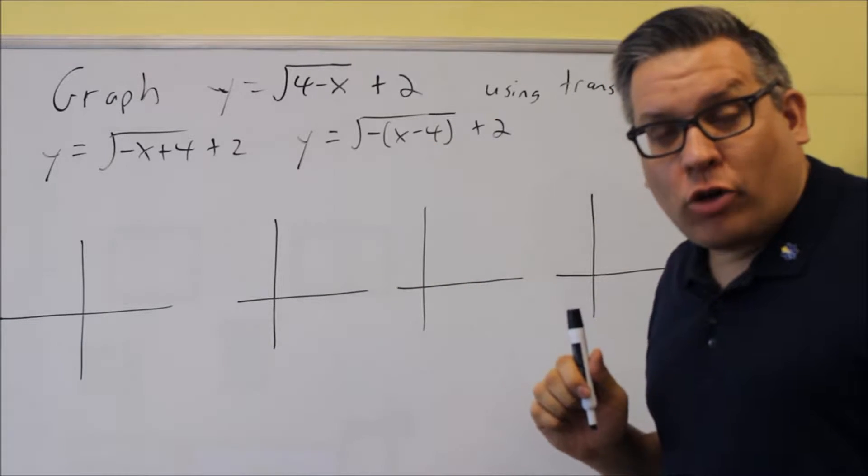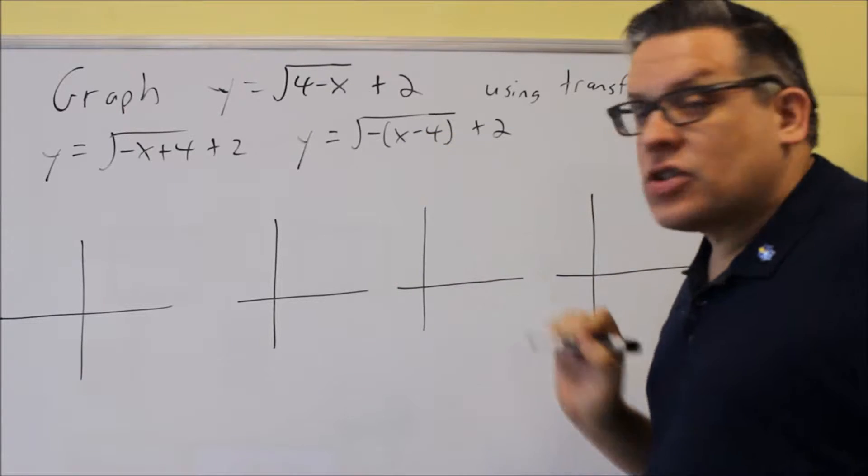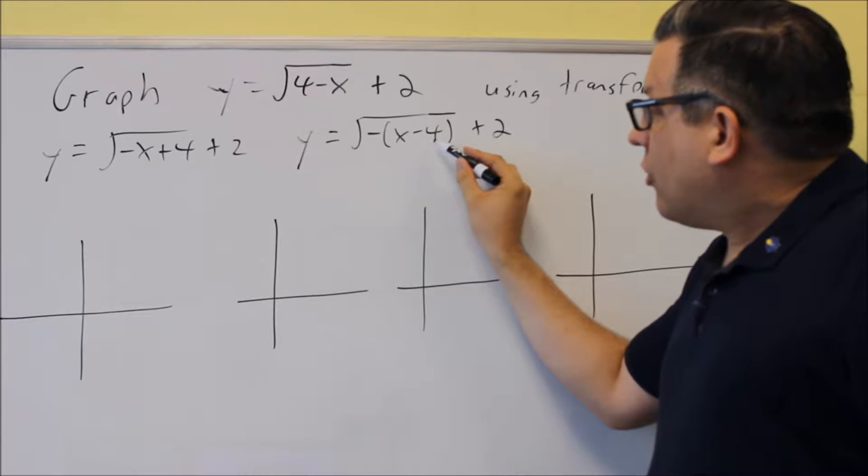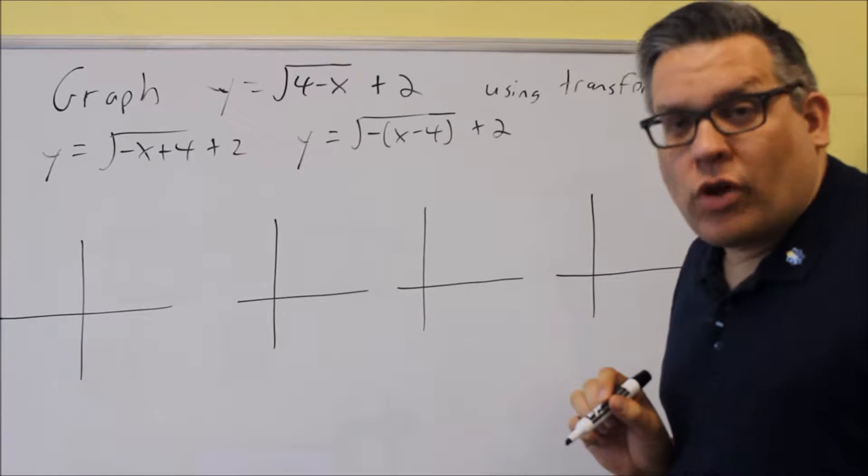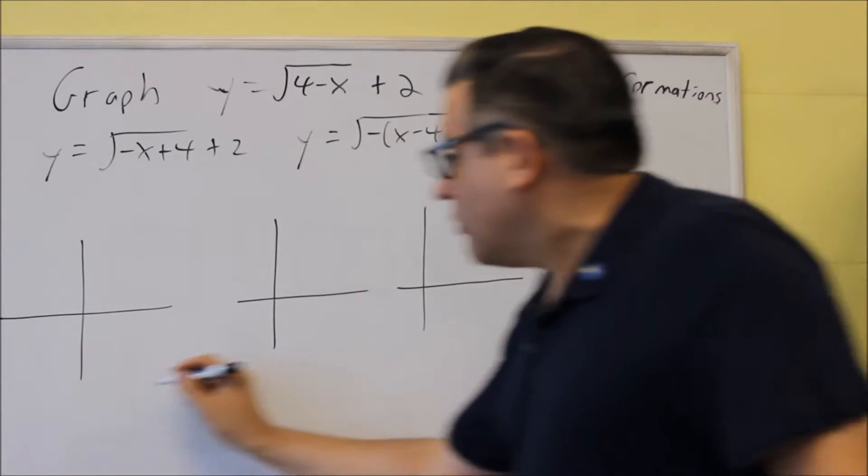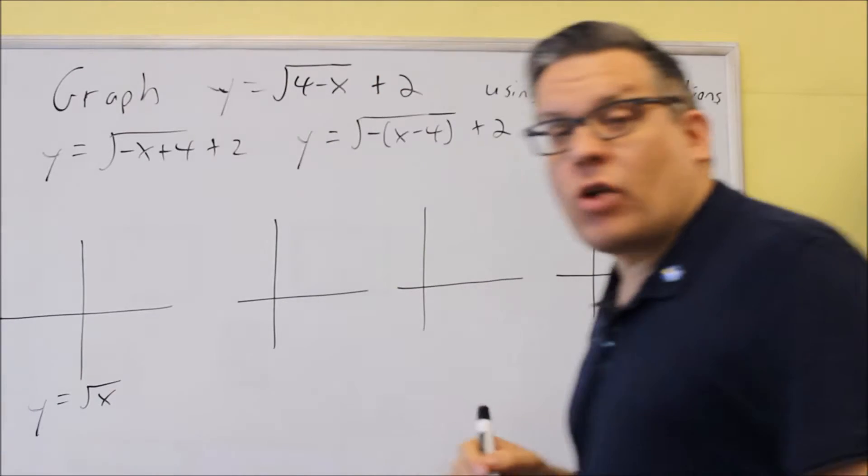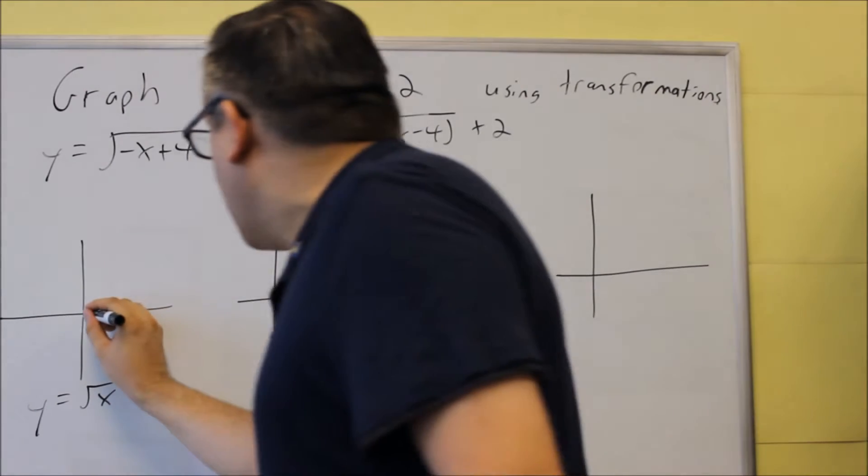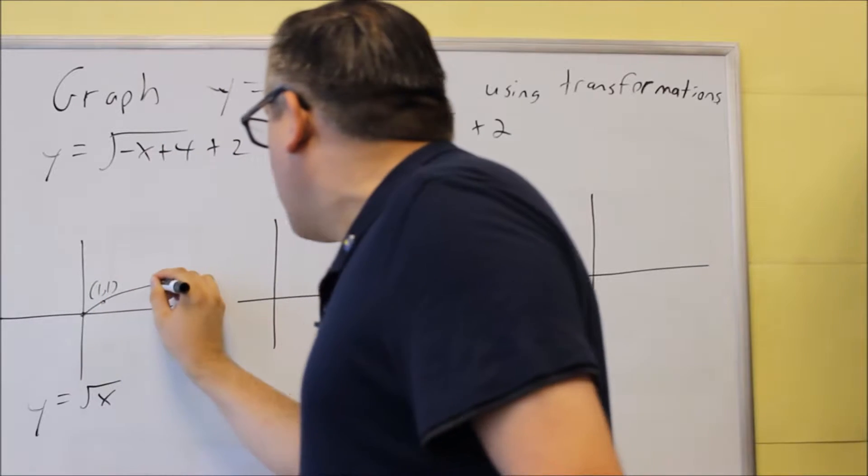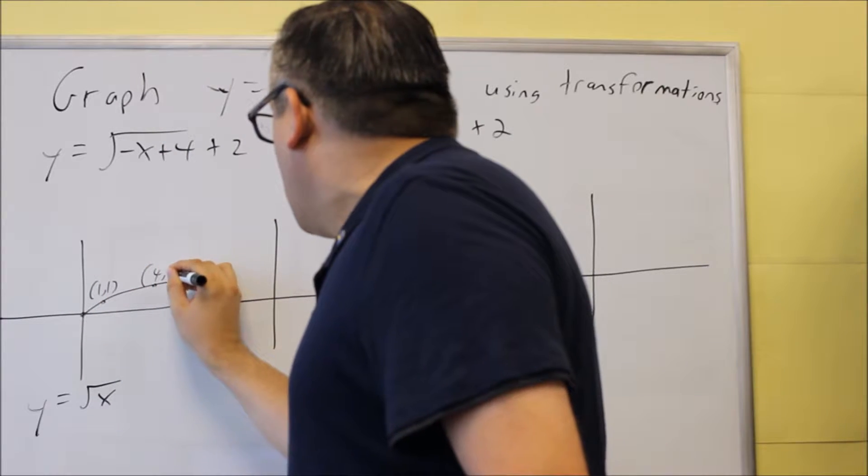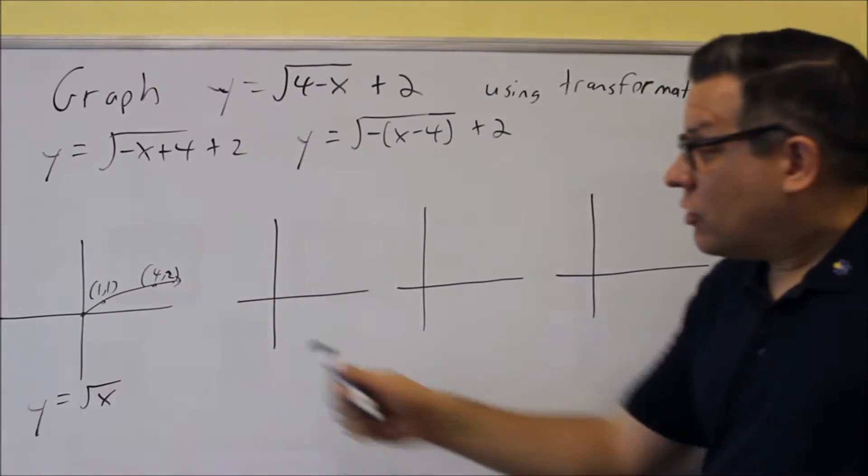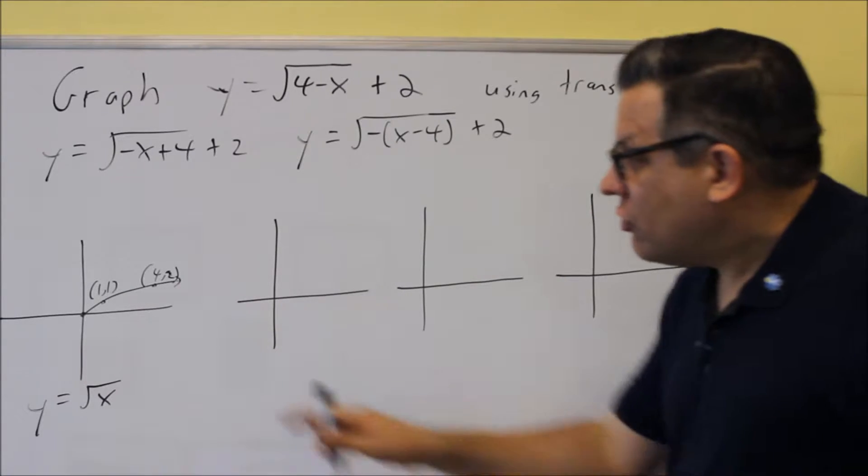So, this is a really important step that you have to do before you jump in and start graphing this one. We now have it in the correct form where we can apply our transformation rules. We've got a positive 1 in front of the x there. Negative is factored out. So, we now know that we're going to move the graph to the right. Let's now do the different transformation stages here. Here, our first graph is always going to be our base graph. We're using the square root of x graph again. So, it's going to go like this.